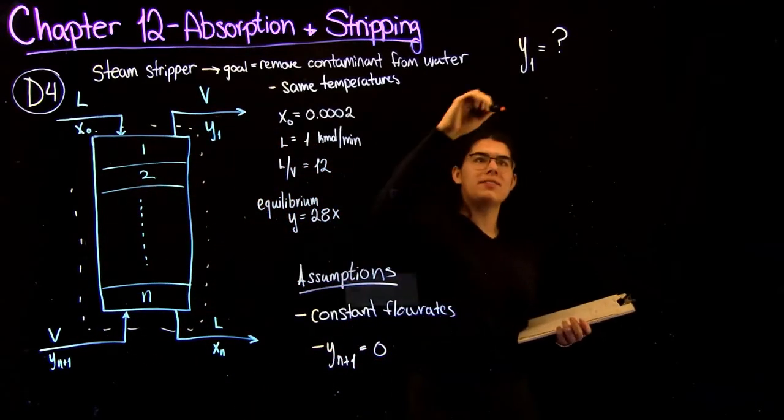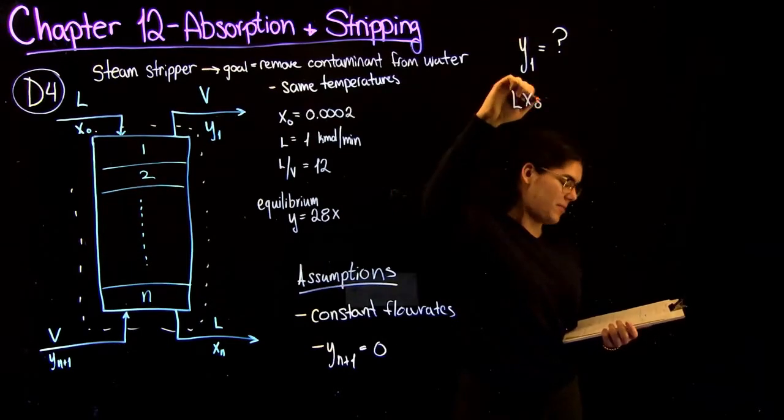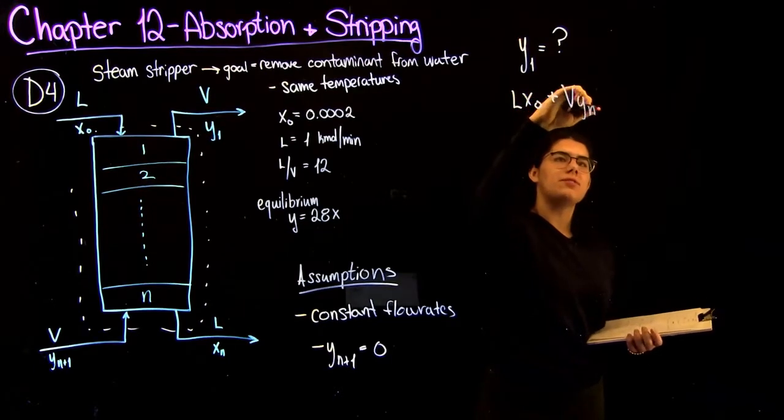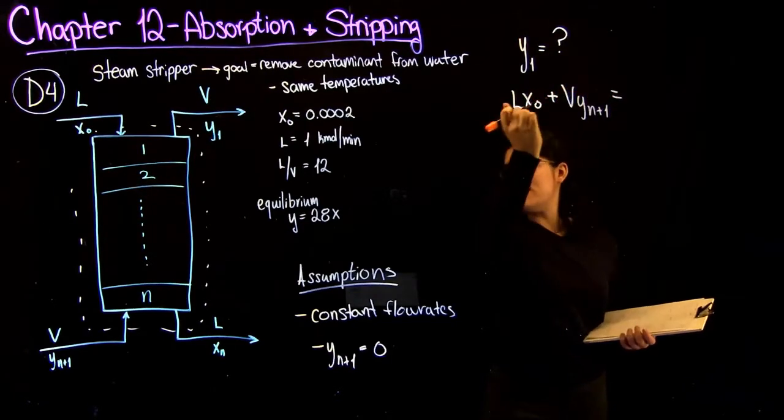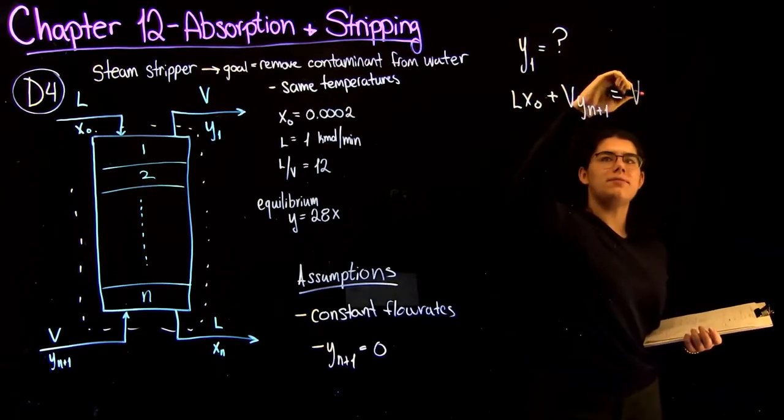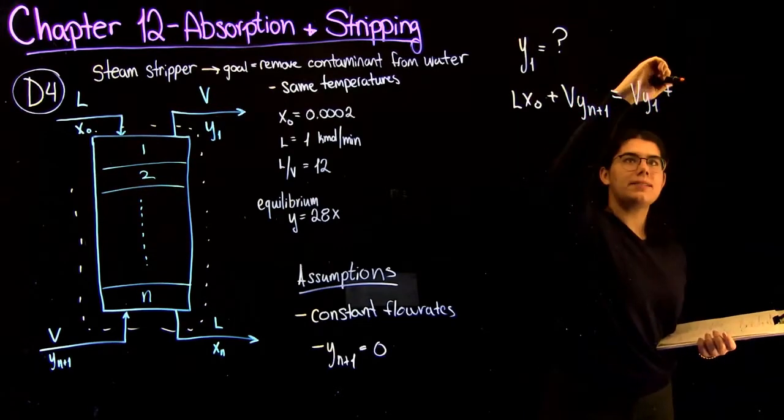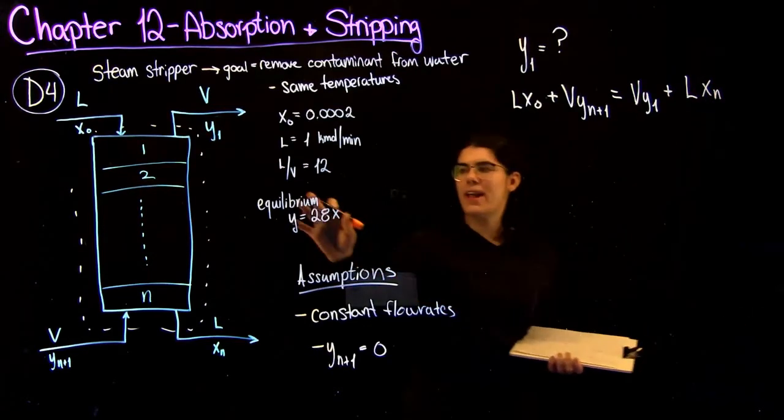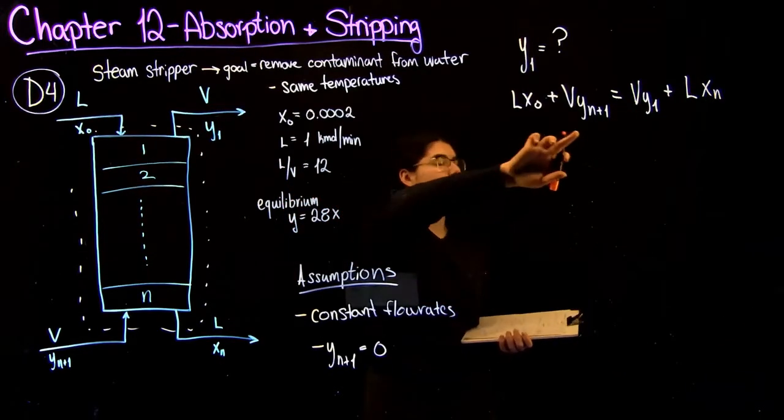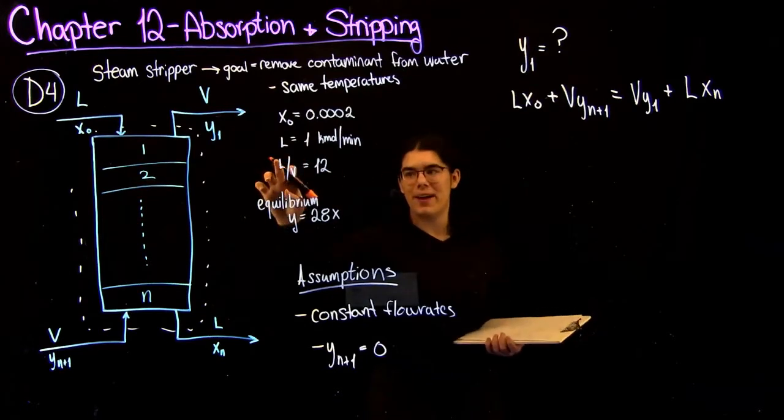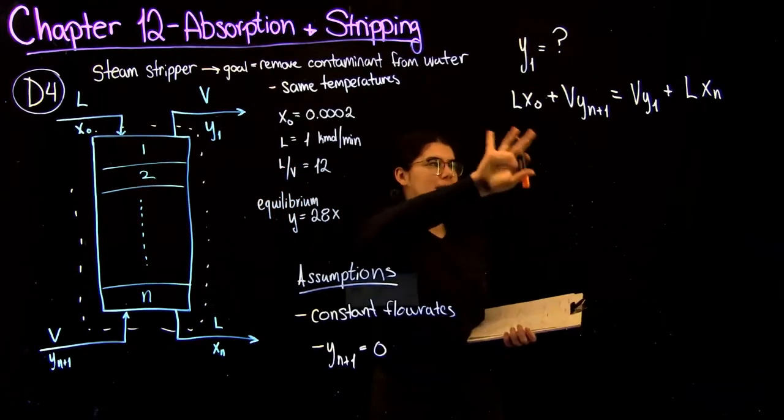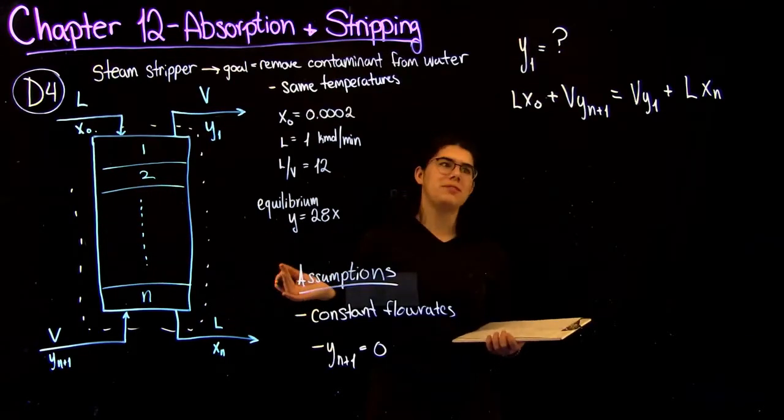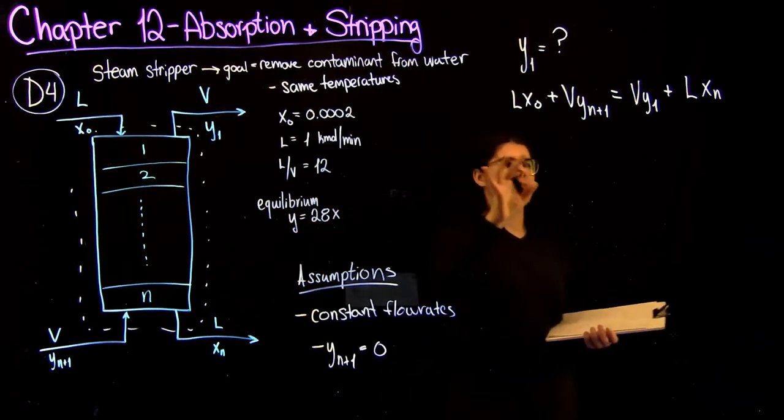So what that looks like is Lx0 plus Vyn plus 1. So that's what's going in. It's going to equal what's going out. So that's Vy1 plus Lxn. And since we're given the L over V, we can solve for Y1 one of two ways. We can find V, or we can put this into the form of our operating line. And since we're going to need the operating line later to find the total number of stages, we might as well just do that now.